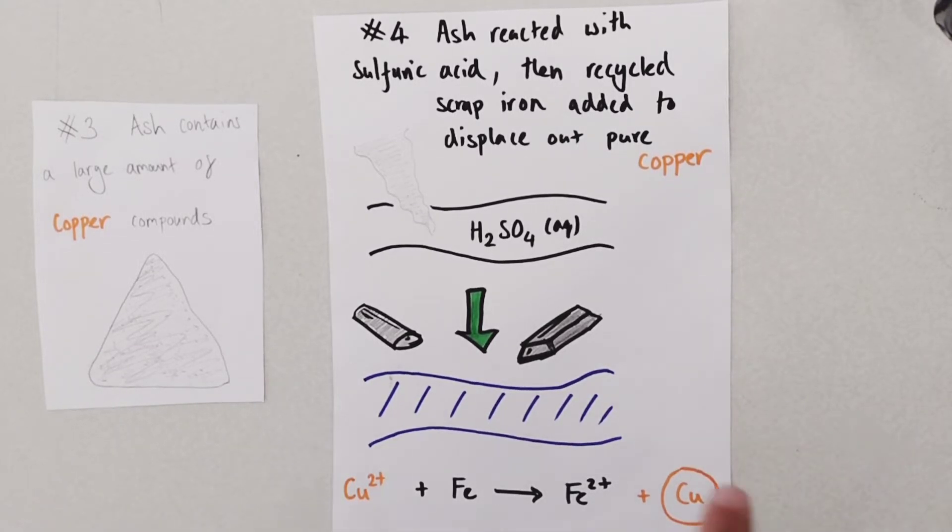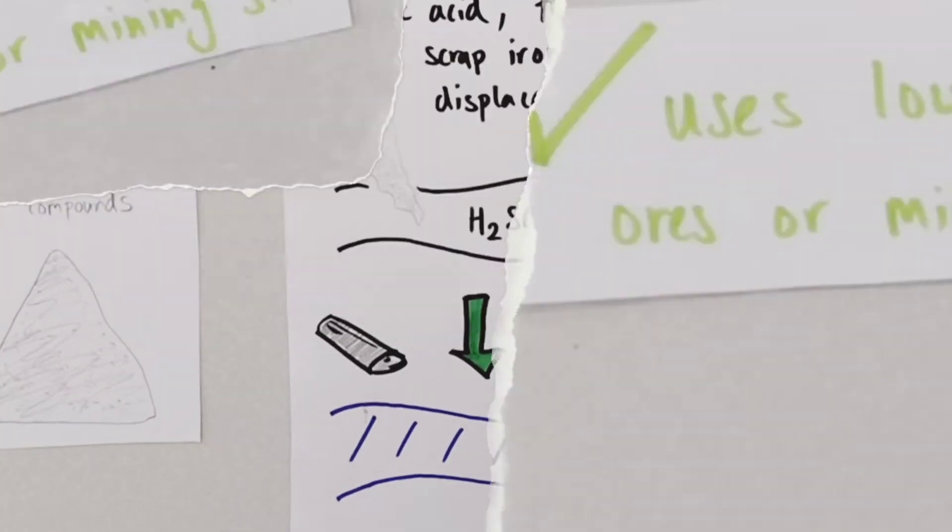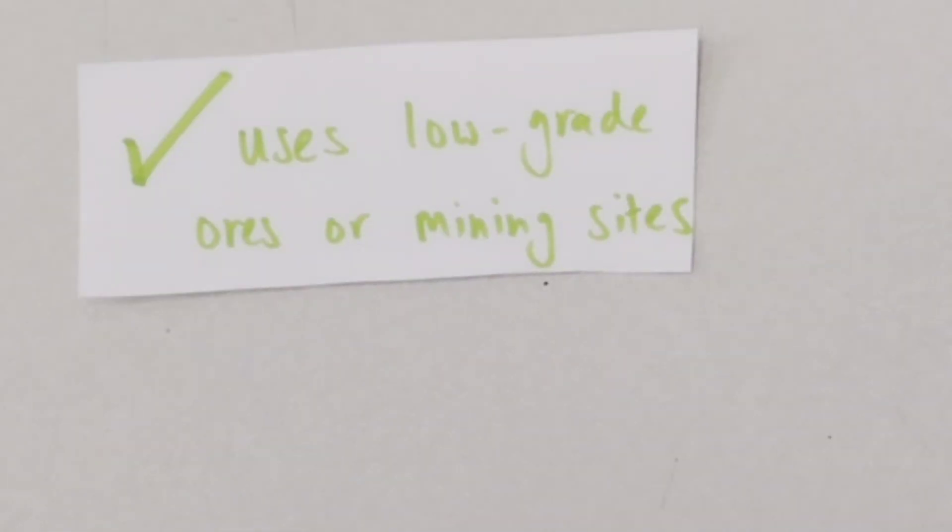There are some really important advantages of using phytomining over traditional mining methods. For example traditional mining methods are depleting our supply of high-grade ores that contain copper. The great thing about phytomining is it doesn't use those ores.